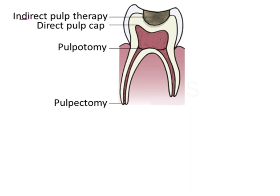For indirect pulp therapy — or indirect pulp capping — this is done when the carious lesion is running deep and attempting to remove the entire lesion may cause pulp exposure. Some of the deep lesion is maintained within the tooth. The rationale is that carious dentine has two layers: an outer layer that is irreversibly damaged and infected, which should be removed, and an inner layer that is reversibly denatured — meaning it can undergo remineralization and is not infected. This inner layer can be preserved and sealed with a suitable medicament to encourage the formation of reactionary or secondary dentine, which helps prevent pulp exposure.